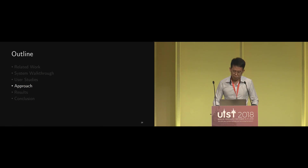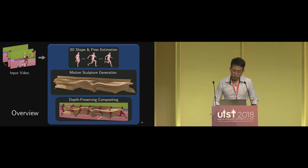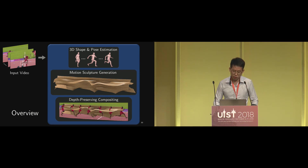Next, I'm presenting our approach. As an overview, Molescope first takes as input an RGB video, estimates 3D geometries, then builds the motion sculpture, and finally renders the sculpture back into the source video or into a synthetic scene.